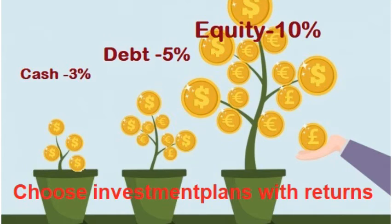And for debt, it is very easy — the only thing is we have to choose 5% per annum.